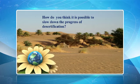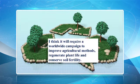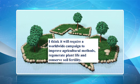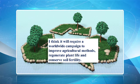How is it possible to slow down the progress of desertification? You can answer: 'I think it will require a worldwide campaign to improve agricultural methods, to regenerate plant life by reforestation — which is the opposite of deforestation — and by conserving soil fertility.'